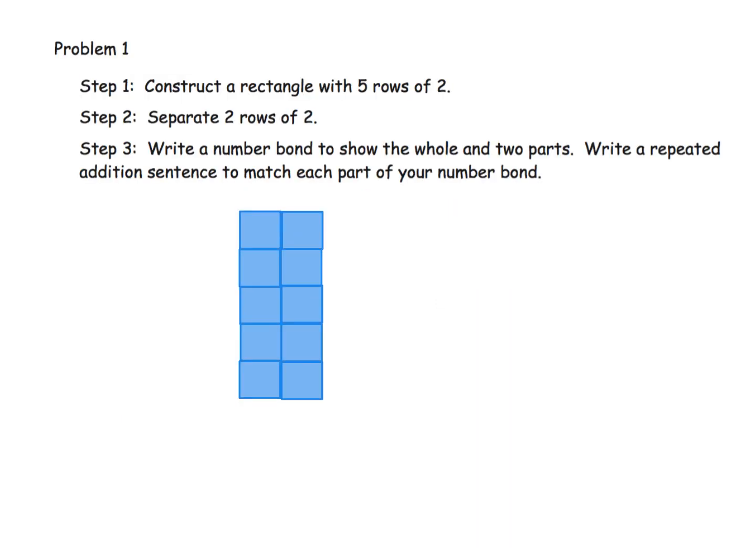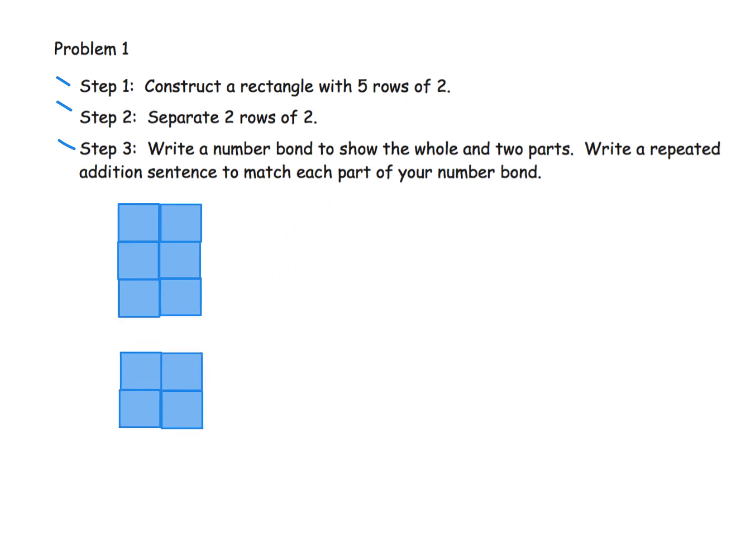Here we're given three steps that we're going to accomplish. First we're going to construct a rectangle with five rows of two and there we go, I've already done that ahead of time. But then it says step two, separate two rows of two. So that's where we're going to take our tiles and break it apart. So our rectangle, instead of having five rows of two, we now have three rows of two here and two rows of two here.